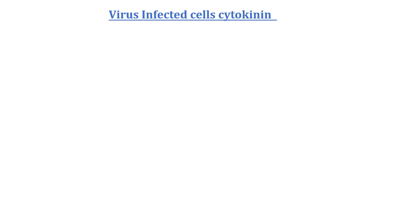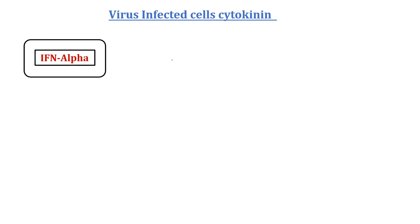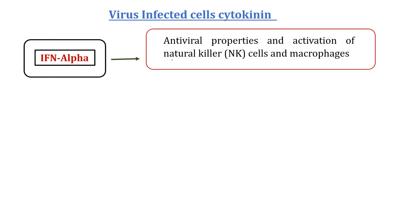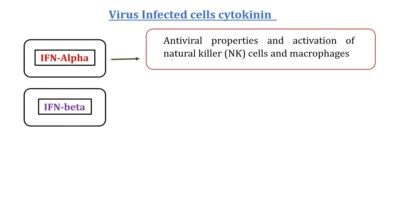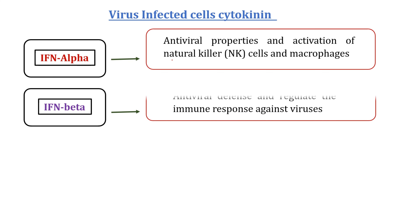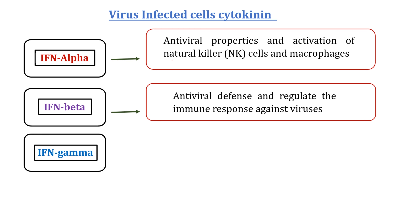Virus-infected cells also release cytokines. These are mainly interferon alpha and interferon beta, released from virus-infected cells soon after infection, along with interleukin-12. Interferon alpha has antiviral properties and is important in the activities of immune cells such as natural killer cells and macrophages. Interferon beta is mainly produced by fibroblasts and other cell types in response to viral infection and is involved in antiviral defense and regulation of the immune response against viruses.